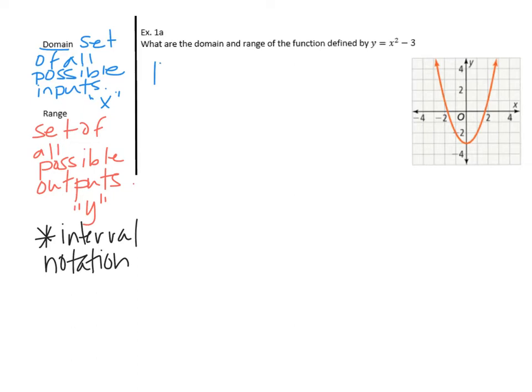For the domain, we're looking at all possible x values. Notice we've got arrows on the left and right sides, which means it will go left and right forever. On the left, that means it goes towards negative infinity, and on the right, towards positive infinity. We could take any x value we want and plug it into that equation.